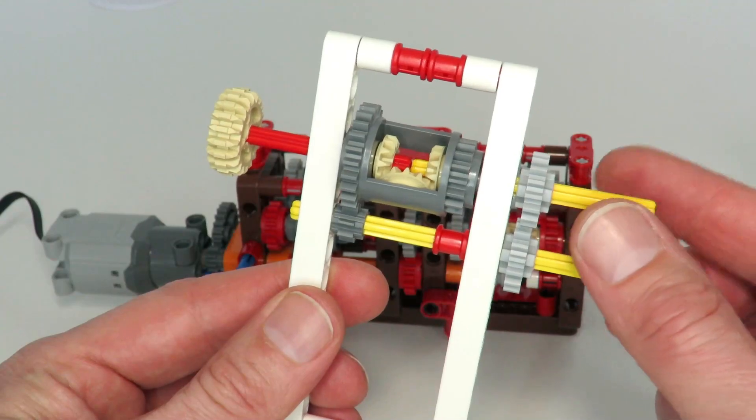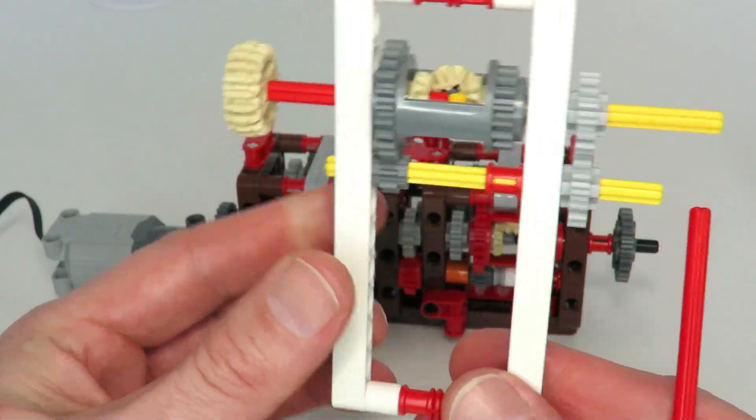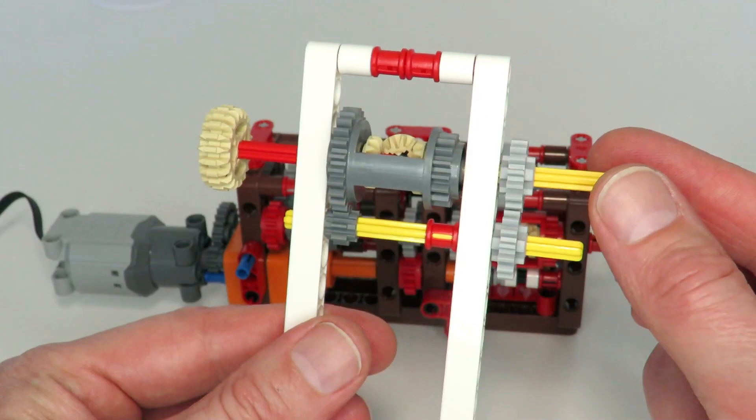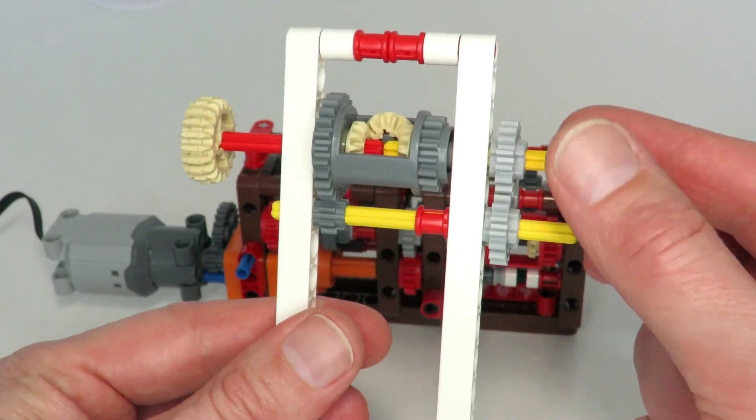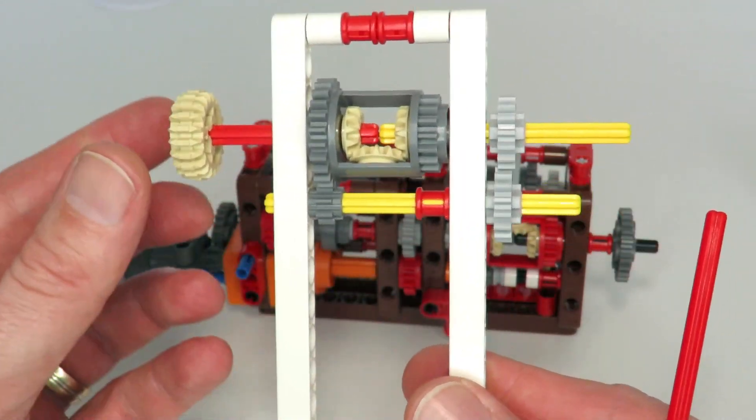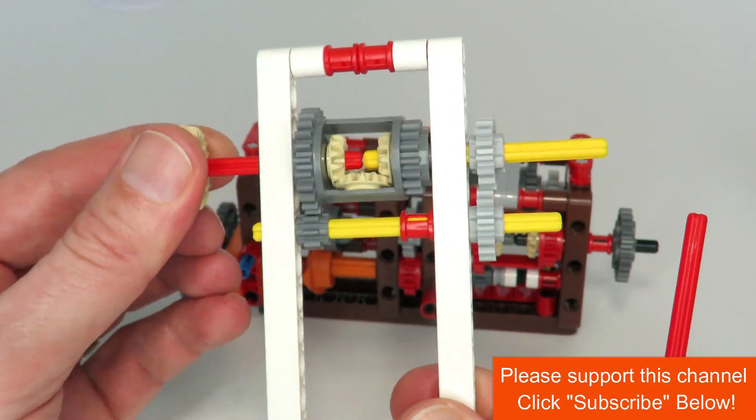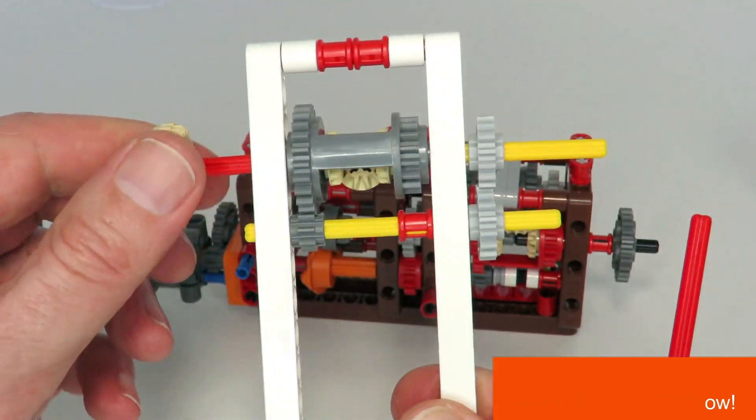What I mean by that, I'll just give you an example. So this is an example of the magic differential. What we've got here is the input and on this side we've got the output. What happens is that you can drive the input and make the output rotate like this.